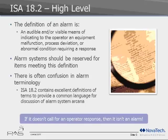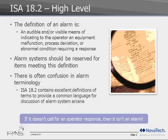Looking at what an alarm actually is — a lot of work in 18.2 was done to carefully craft that definition. An alarm is an audible or visible means of indicating to an operator an equipment malfunction, process deviation, or abnormal condition, and the key is that it requires a response. Many legacy alarms were really informational messages not requiring a response. Here, alarms are specifically defined as requiring an operator response.